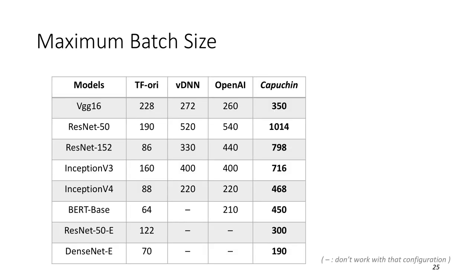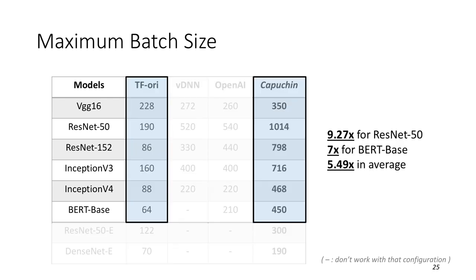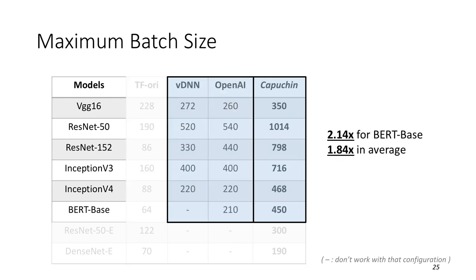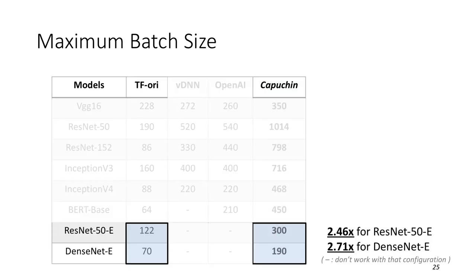Next, let's see the comparison on the maximum batch size. First, in graph mode, Capuchin promotes the maximum batch size by up to 9.27 times for ResNet-50 and 5.49 times in average. Especially for the BERT, Capuchin achieves 7 times batch size improvement. Compared to the second best, Capuchin can still achieve batch size promotion up to 2.14 times for BERT and 1.84 times in average. In Eager mode, Capuchin achieves 2.46 and 2.71 times batch size increment on ResNet-50 and DenseNet.